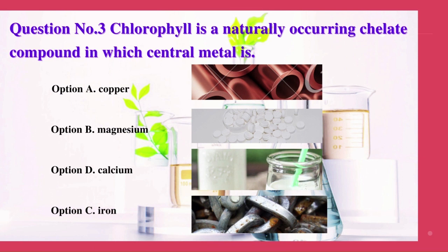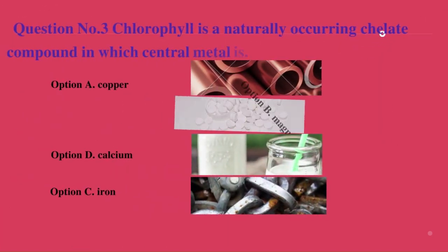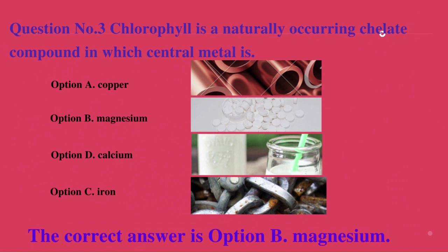Question number 3. Chlorophyll is a naturally occurring chelate compound in which the central metal is? A. Copper. B. Magnesium. C. Iron. D. Calcium. The correct answer is B. Magnesium.